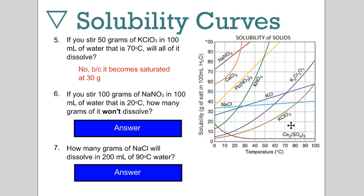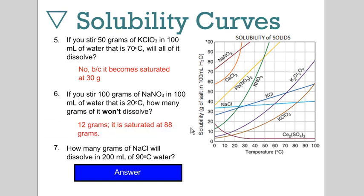Sodium nitrate, 20 Celsius, 100 mils of water. Let's look at 20 Celsius, find sodium nitrate - it's the red line here. At 20 Celsius we can dissolve 88-ish grams of solute per 100 mils of water. So if you stir 100 grams in, how many grams will not dissolve? 12 grams. It saturates at 88, so once you've put 88 grams in, the other 12 will not dissolve.